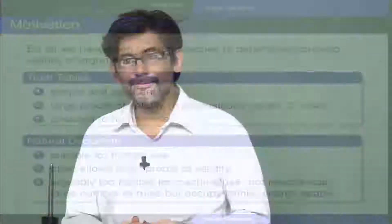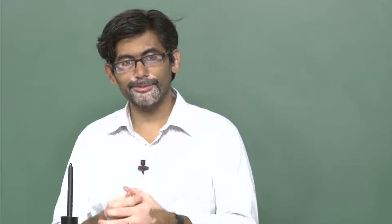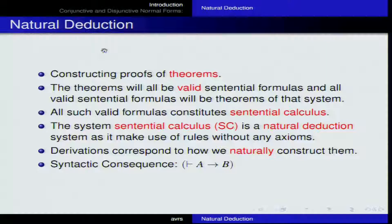In the natural deduction method, we start with simple truth-preserving rules like modus ponens, modus tollens, and constructive dilemma — all valid principles of reasoning. We add these rules of inference to the assumptions from the formula we are trying to prove, and from that we derive the desired formula. Natural deduction is used for constructing proofs of theorems — obviously true formulas, also considered tautologies. Theorems are different from axioms; axioms are self-evident rules. All valid sentential formulas are theorems of the system.